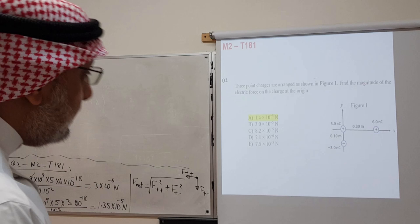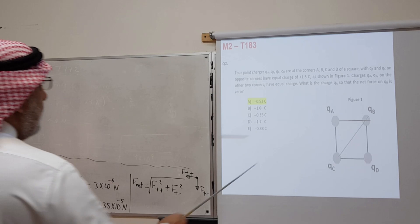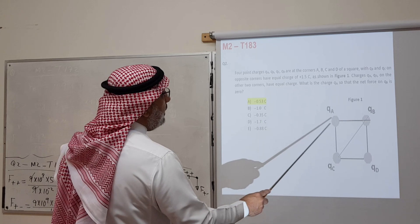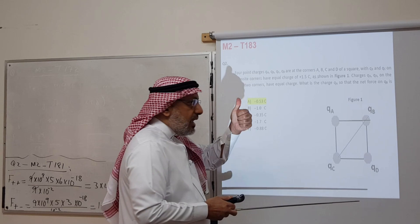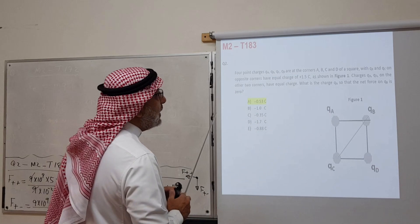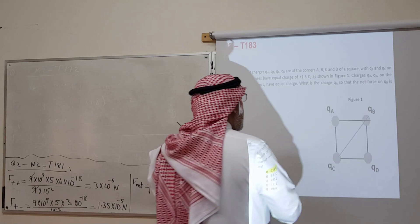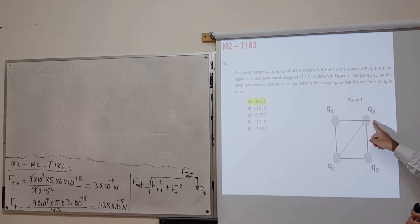Question from term 172: four point charges QA, QB, QC, QD are at the corners A, B, C, D of a square. QB and QC on opposite corners have equal charges of plus 1.5 coulombs. QA and QD on the other two corners have equal charges (same magnitude and sign). What is the value of QA such that the net force on QB is zero? We must first determine the signs of QA and QD by analyzing forces on QB.